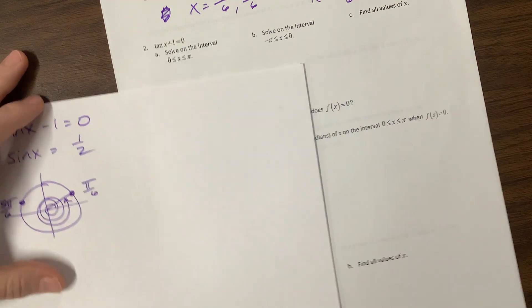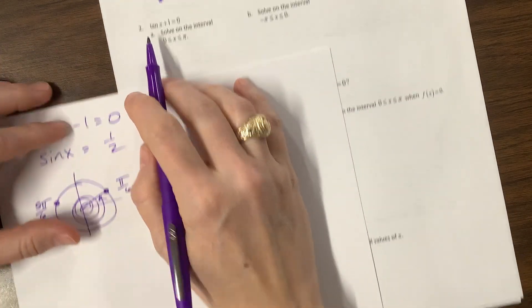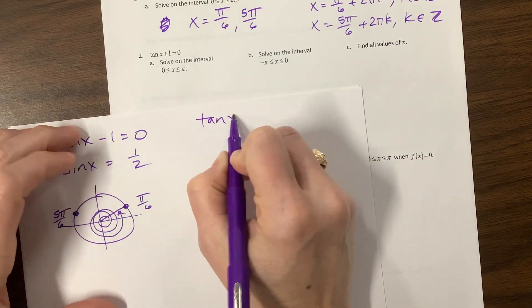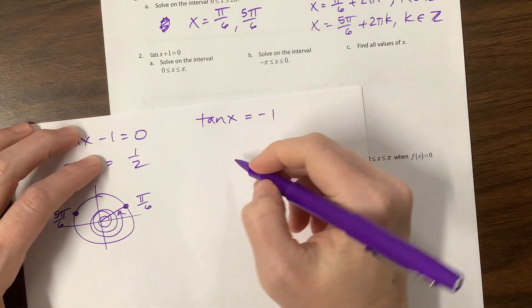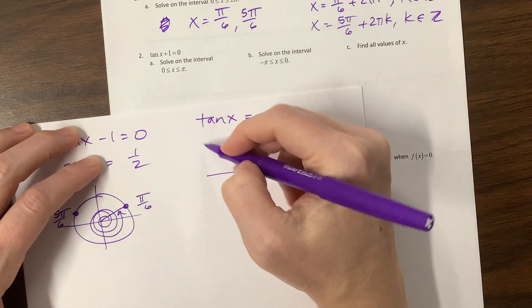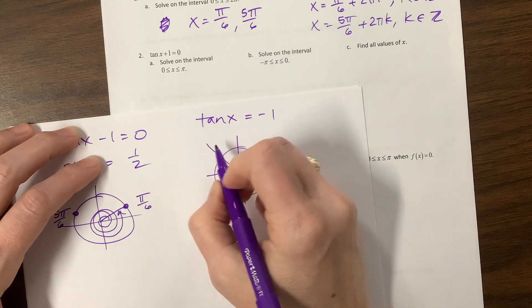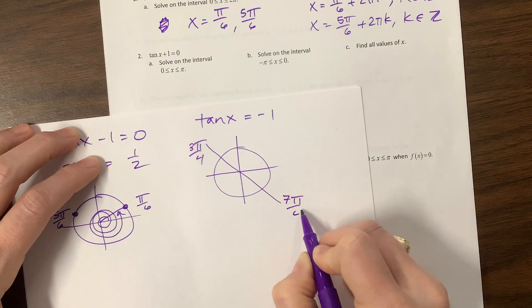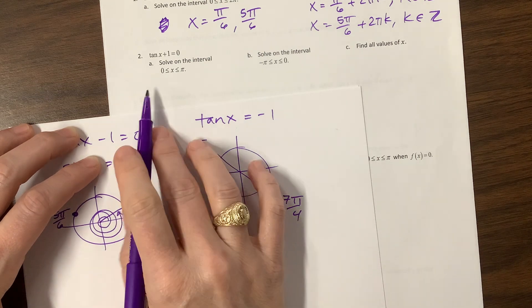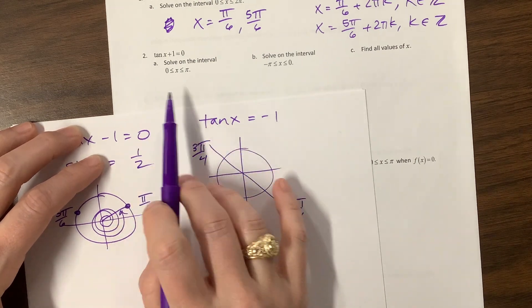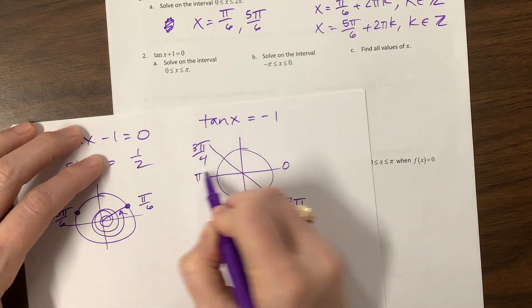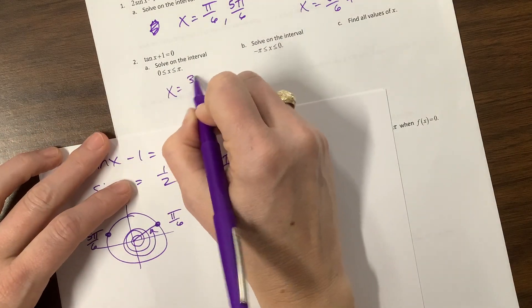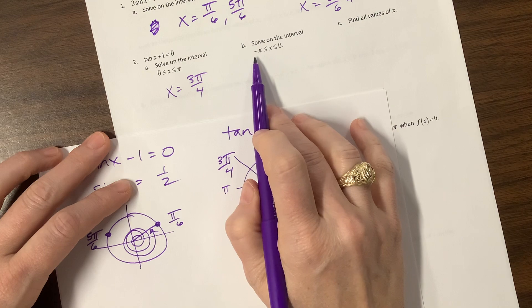The next one. They're telling us tan(x) + 1 = 0, so tan(x) would equal -1. Tangent is the slope. Where is slope -1? Well, it's through here. This is 3π/4. Notice I could add π and keep going. So the first one says on the interval 0 to π. I'm going to go from 0 to π, and the only answer that I have is 3π/4. So x = 3π/4.